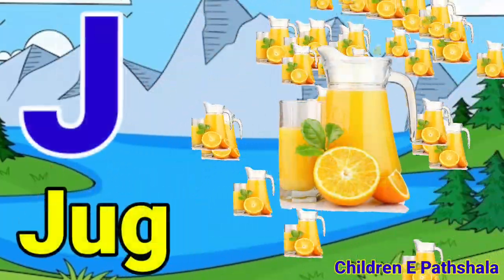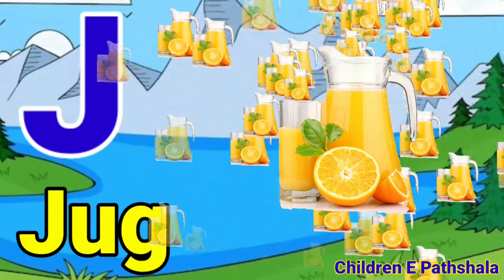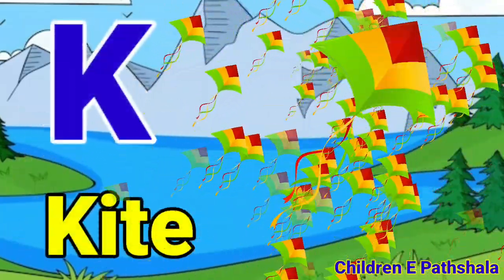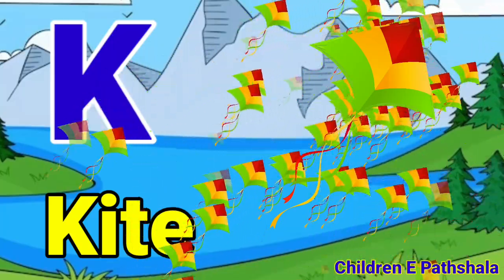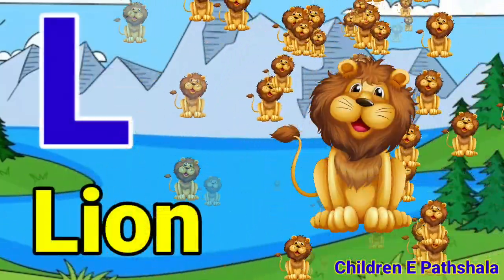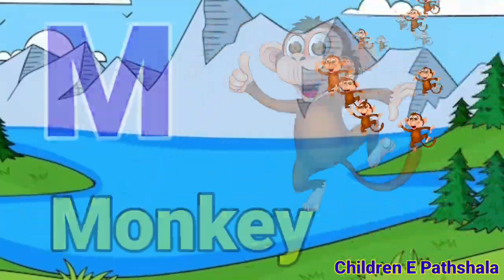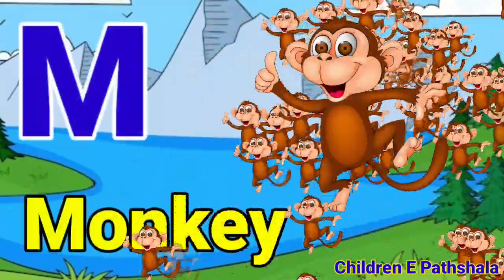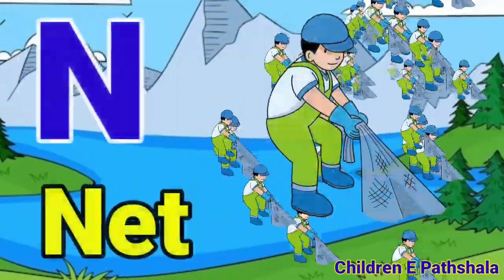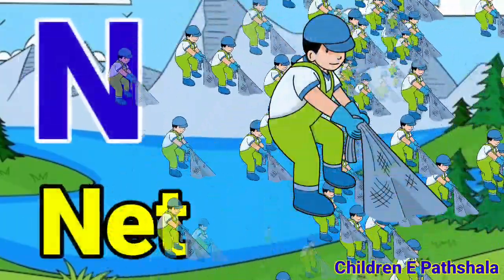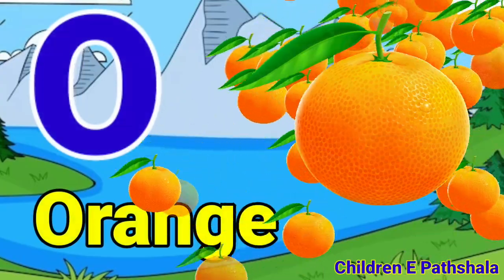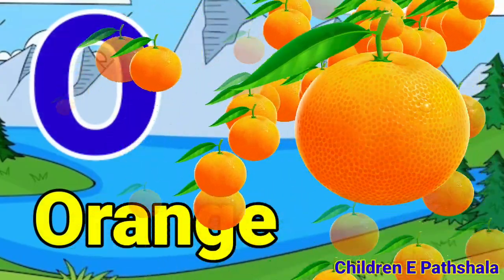J for dog, K for kite, L for lion, M for monkey, N for neck, O for orange.